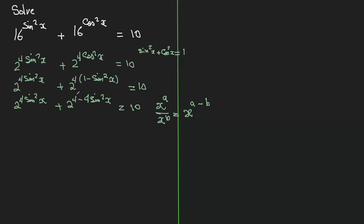Here, x is 2, a is 4, and b is 4 sin squared x. So we go backwards using that law, and we have 2 to the power of 4 sin squared x plus 2 to the power of 4 over 2 to the power of 4 sin squared x equals 10.